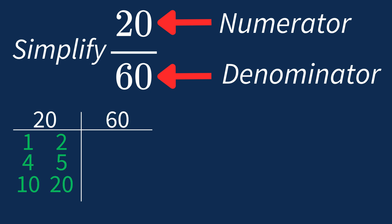For 60, the factors are 1, 2, 3, 4, 5, 6, 10, 12, 15, 20, 30, and 60.